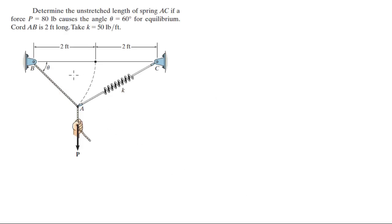Alright guys, let's do this problem which they want you to find the unstretched length of the spring AC if a force B of 18 pounds causes the angle theta to be 60 degrees for equilibrium. They tell you that AB is 2 feet long, this is 2 feet, and this whole thing is 4 feet.